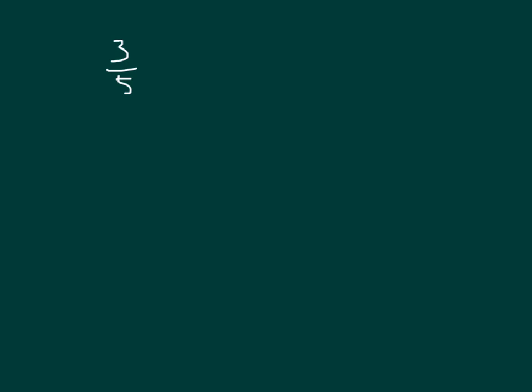Here's another fraction where we're asked to express it as a decimal. We'll rewrite it. Three-fifths times that version of 1 to be able to get to either tenths, hundredths, or thousandths. We can get to tenths by multiplying by 2 over 2.